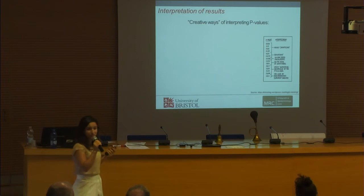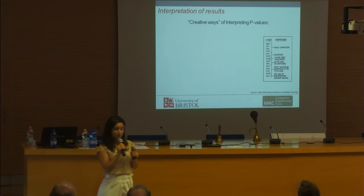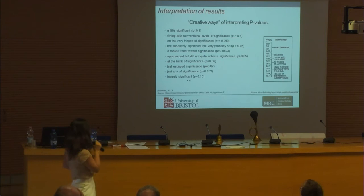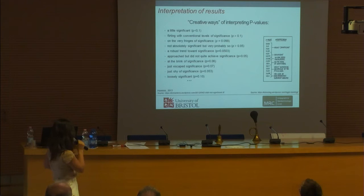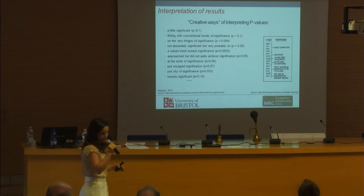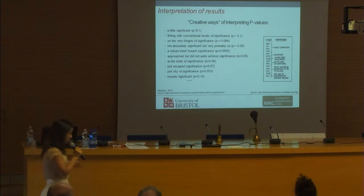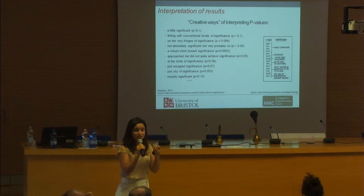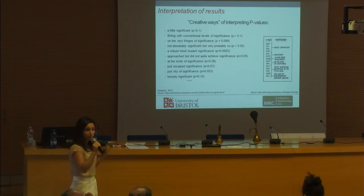A statistician at King's College compiled 500 ways in which people misinterpret p-values. Some of my favorite examples include 'flirting with conventional levels of significance,' 'not absolutely significant, but very probably so,' and 'loosely significant.' Researchers are not doing this because they are mean — they are responding to a reward system that puts pressure on publishing what is perceived as sexy findings.